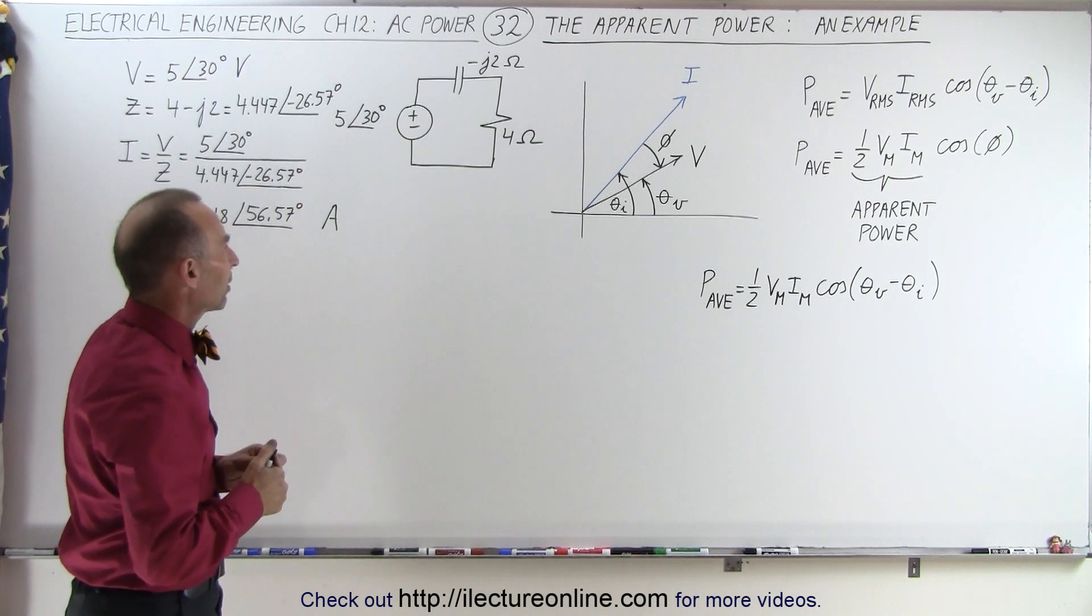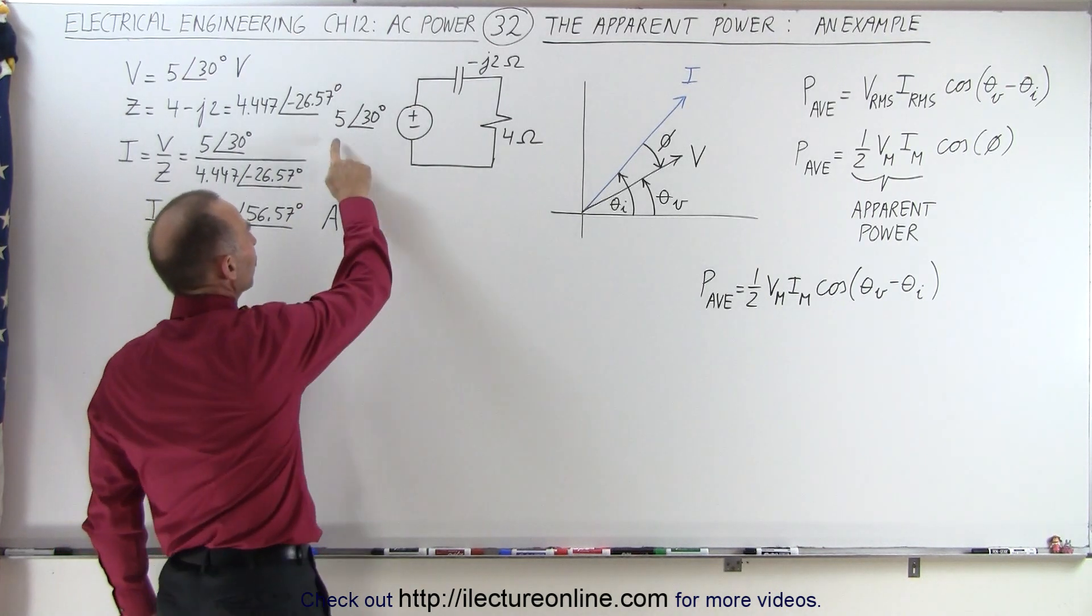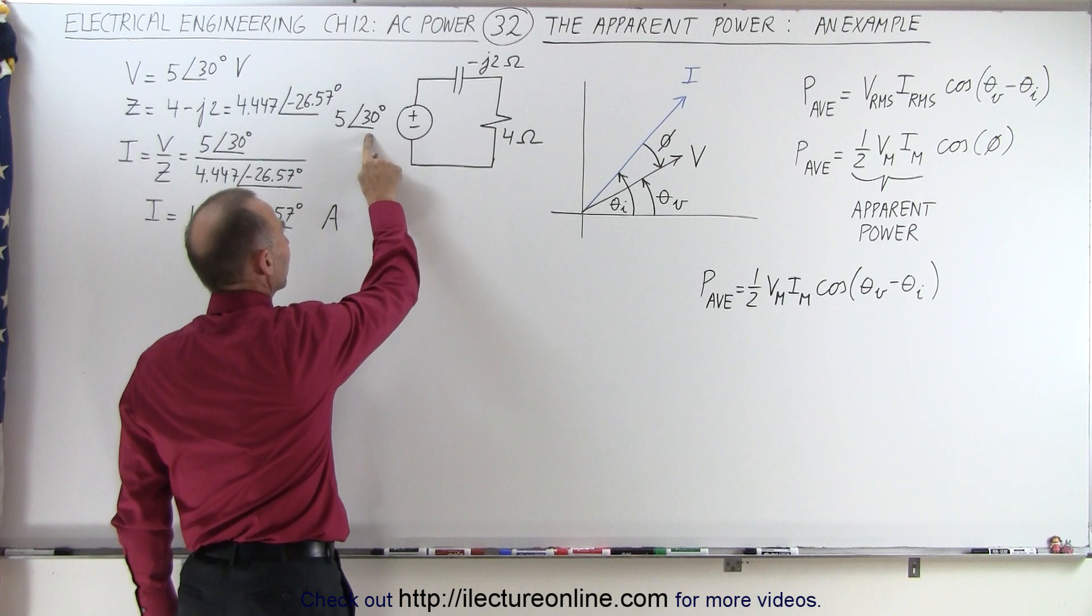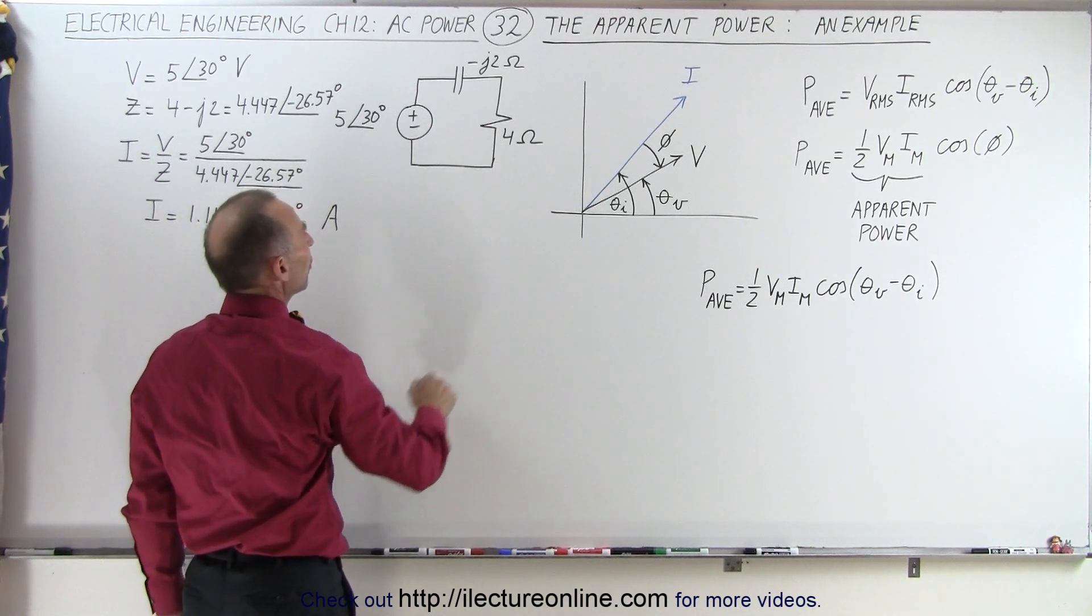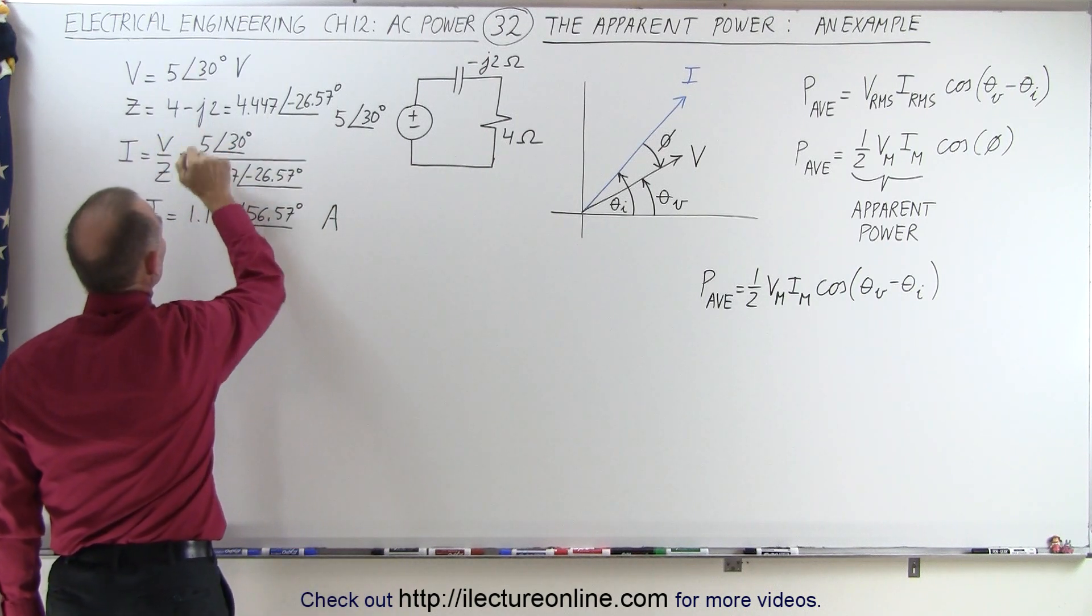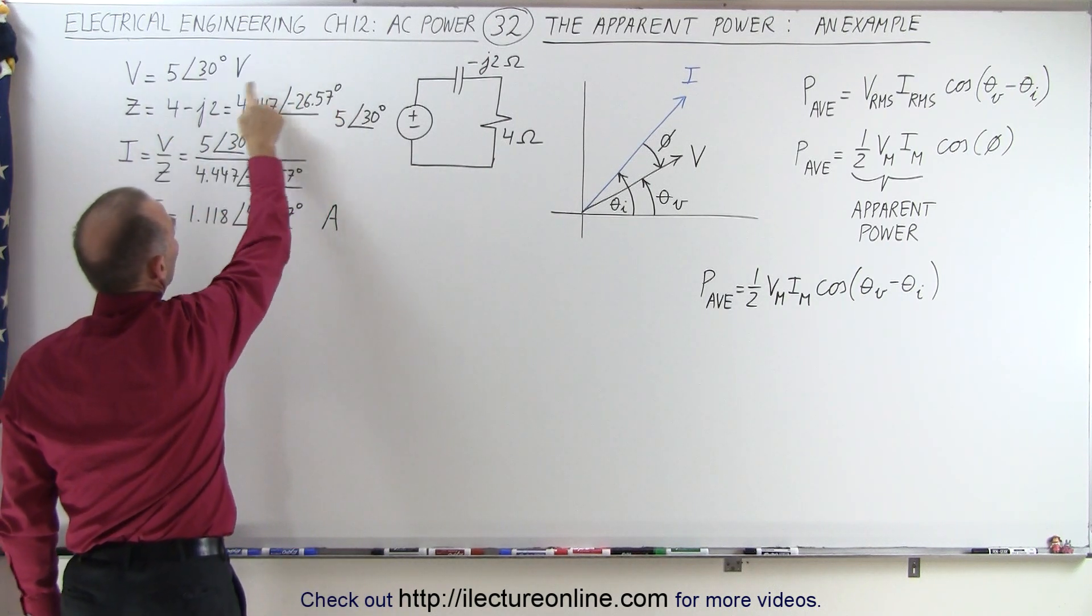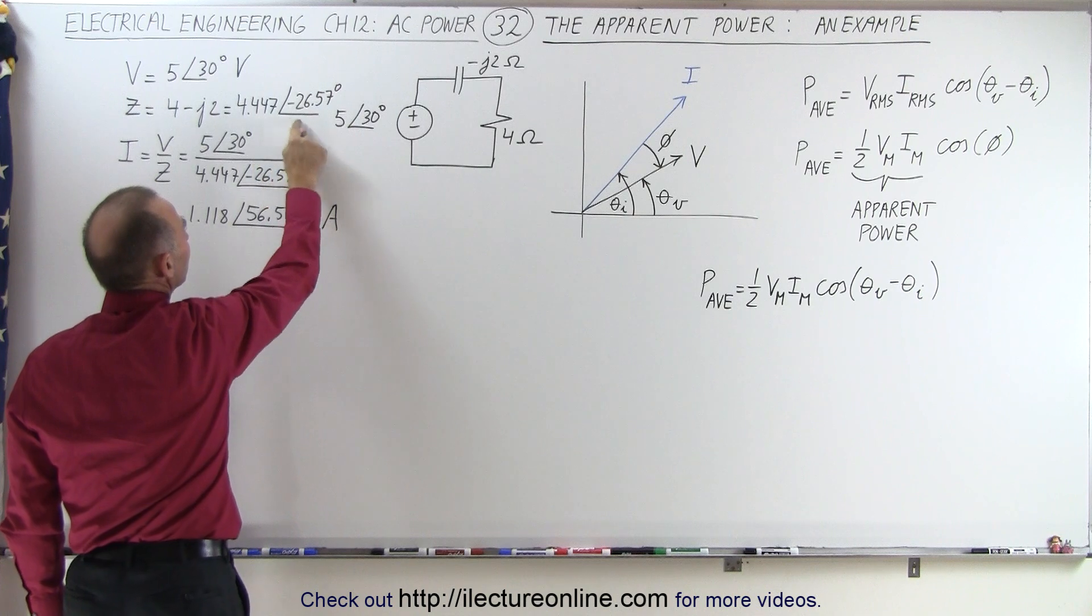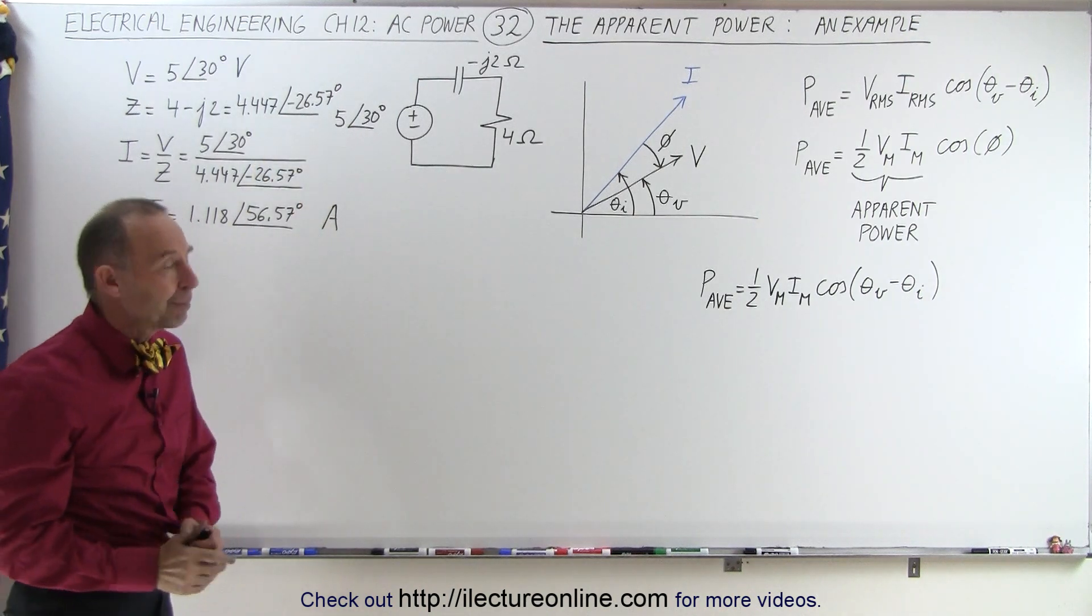Here we have a simple circuit that we've seen before. We have a voltage supply with maximum voltage of 5 volts and a phase angle of 30 degrees. We have a resistor and capacitor together giving us an impedance of 4 minus j2, which we can convert to the magnitude and phase angle format of the impedance.